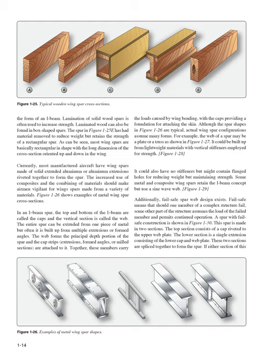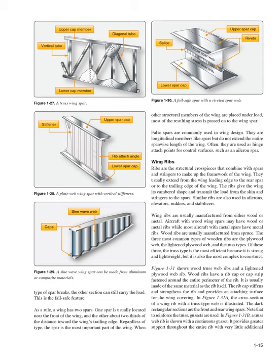Actual wing spar configurations assume many forms. The web of a spar may be a plate or a truss, and it could be built up from lightweight materials with vertical stiffeners employed for strength. It could also have no stiffeners but might contain flanged holes for reducing weight while maintaining strength. Some metal and composite wing spars retain the I-beam concept but use a sine wave web. Additionally, fail-safe spar web design exists. Fail-safe means that should one member of a complex structure fail, some other part of the structure assumes the load of the failed member and permits continued operation. A fail-safe spar is made in two sections — a top section consisting of a cap riveted to the upper web plate, and a lower section that is a single extrusion consisting of the lower cap and web plate, spliced together. If either section breaks, the other section can still carry the load.